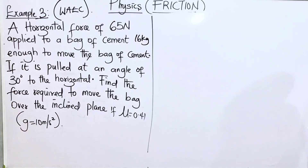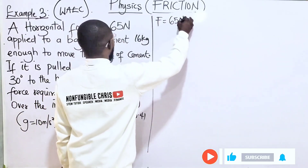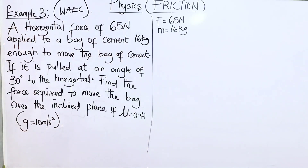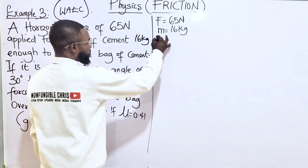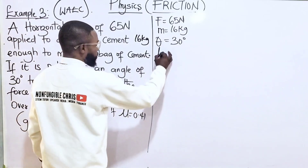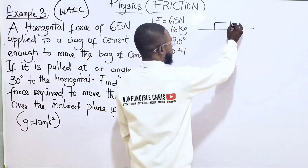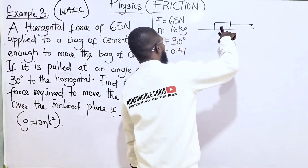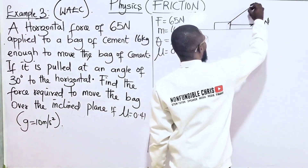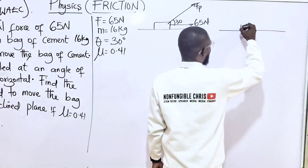Let's look at question number three regarding friction. A horizontal force of 65 newtons is applied to a bag of cement of 16 kilograms — just enough to move the bag. If it is now applied at an angle of 30 degrees to the horizontal, find the force required to move the bag. The coefficient of friction is 0.41.